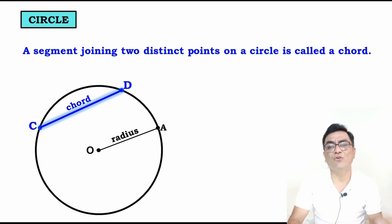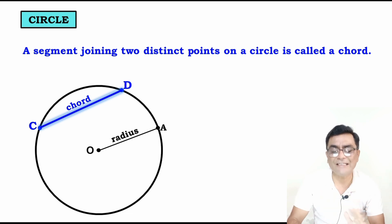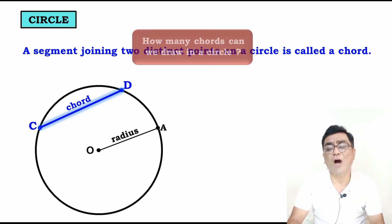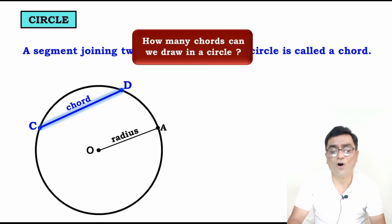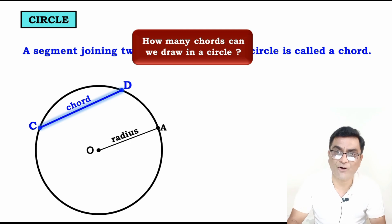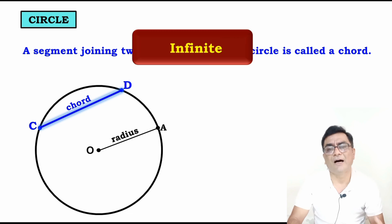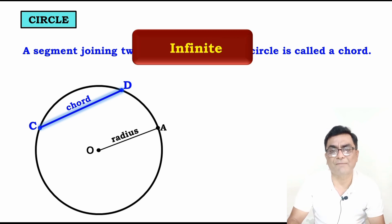A segment joining two distinct points on a circle is called a chord — very simple. How many chords can we draw in a circle? Just like the radius, we can draw infinite chords in a circle.